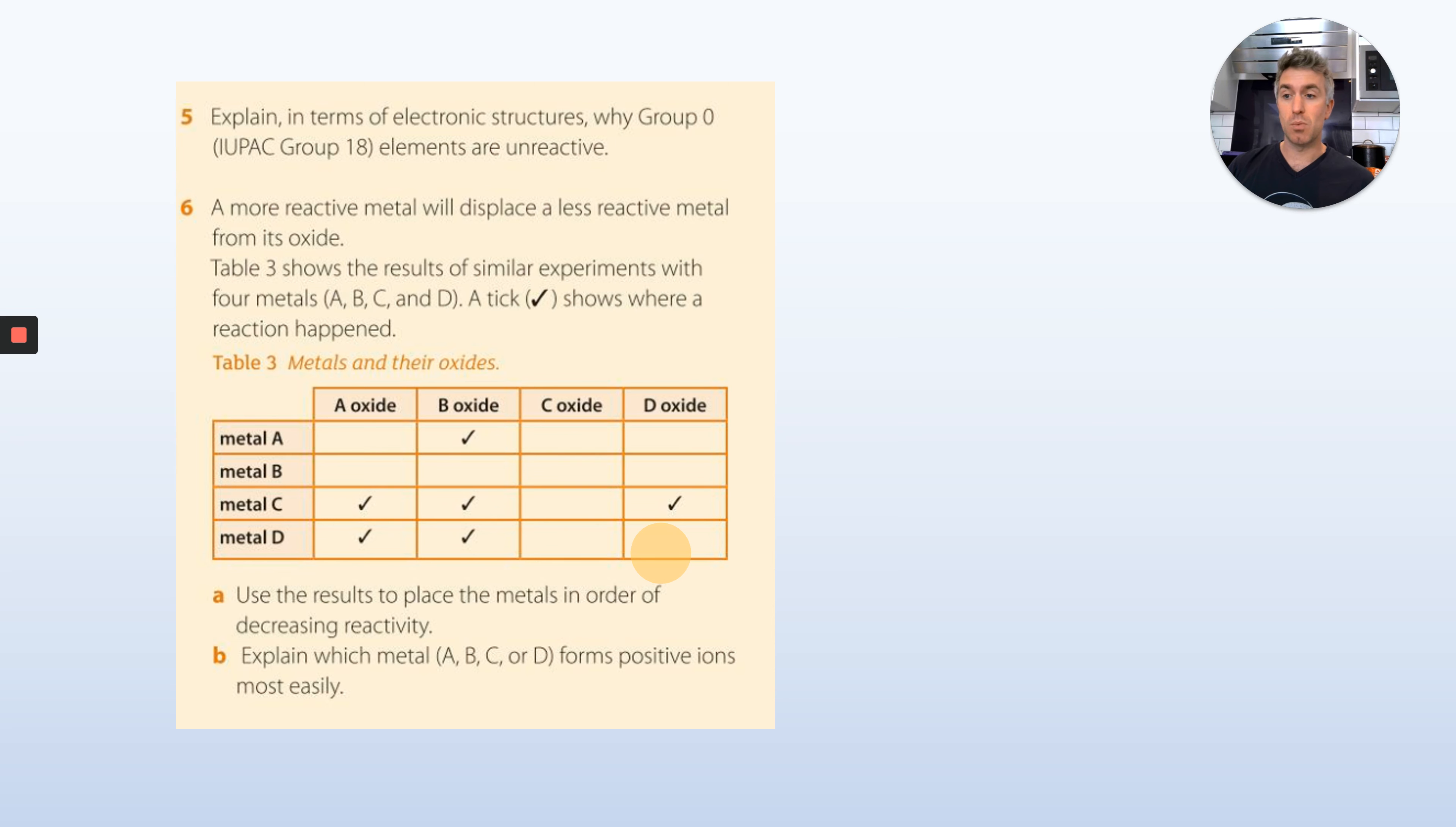Number six. A more reactive metal will displace a less reactive metal from its oxide. Table 3 shows the results of a similar experiment with four metals A, B, C, and D. A tick shows where a reaction happened. Use the results to place the metals in order of decreasing reactivity. So if there's a tick, that means a metal was displaced. The row that has most ticks will probably indicate that that's not a very reactive metal, because if every single time you put something with it, it got kicked out, then it's not very reactive. The column that has no ticks is going to be a very reactive metal, because every time you put them together, it was still too strong. So those two things should help you, and you can work the rest out.